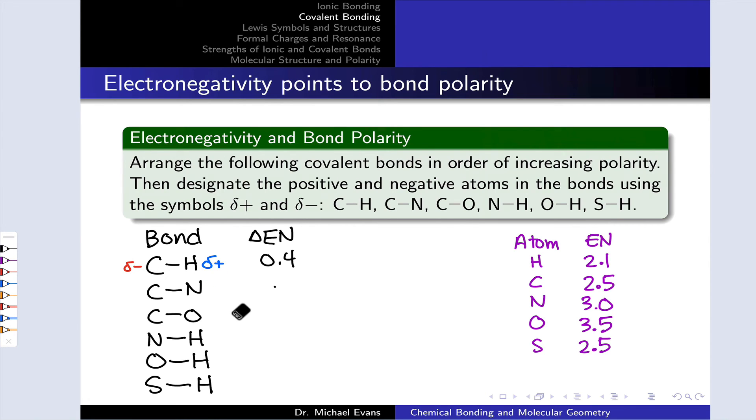For the C-N bond, nitrogen is more electronegative than carbon to the tune of 0.5 electronegativity units, 3.0 minus 2.5. For the carbon-oxygen bond, oxygen is again more electronegative than carbon, and the difference in electronegativity is even larger now, 1.0.